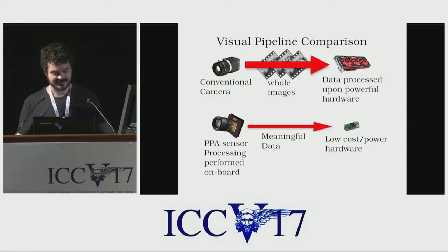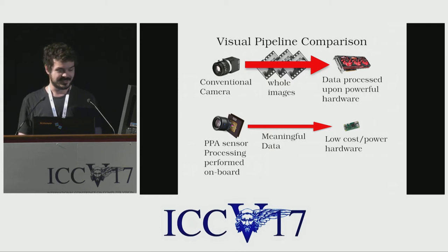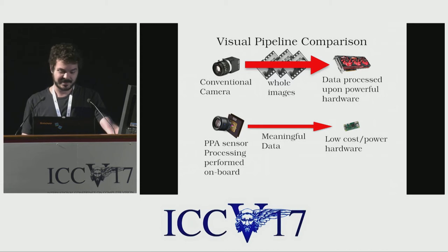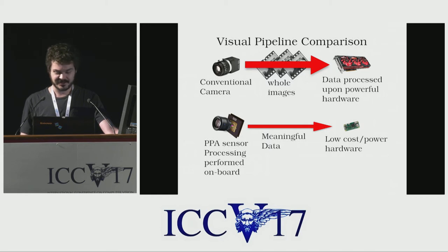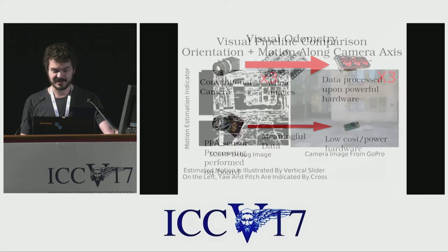Here we see a comparison between the visual pipelines of a standard camera and a PPA sensor. The standard approach requires entire images to be transferred to external hardware for processing, whereas the PPA can perform processing on board and then only output meaningful data. This can result in a huge decrease in the amount of bandwidth and power required to process each frame, and allows the sensor to operate at extremely high frame rates.